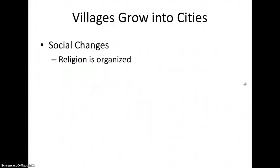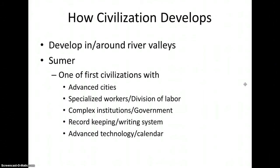Social classes eventually developed, and religion became more organized. Civilizations developed in and around river valleys that flooded annually, with some of the earliest developing in Mesopotamia, which is now part of modern Iraq. All civilizations included these factors: advanced cities, a specialized workforce (otherwise known as a division of labor), complex institutions or government systems, record keeping (also known as a writing system), and advanced technology such as a calendar.